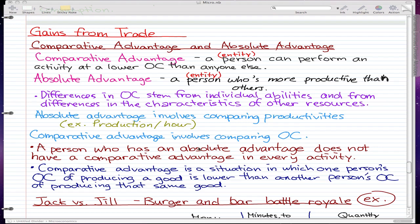A person who has an absolute advantage does not have a comparative advantage in every activity. An example of this would be Furious Pete, who you guys may have watched on YouTube. I for one think he is a better eater and better YouTuber than most people—I mean, he has all these subscribers.